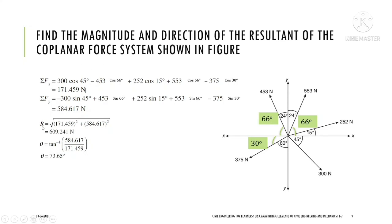To find the resultant: R = √(ΣFx² + ΣFy²) = √(171.45² + 584.617²). The angle of resultant is theta = tan⁻¹(ΣFy / ΣFx) = tan⁻¹(584 / 171) = 73.65°.